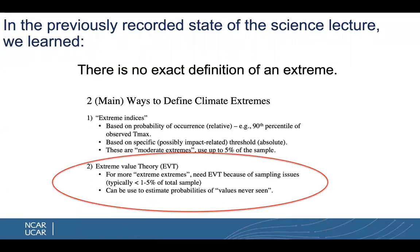In the previously recorded State of the Science Lecture on Extremes, we learned that there is no exact definition of an extreme. We pointed out there are two main ways to define climate extremes, the second being extreme value theory, which is for the more extreme extremes. These need extreme value theory because of sampling issues, which is typically less than 1 to 5 percent of the total sample.